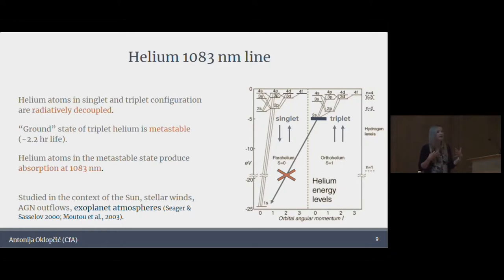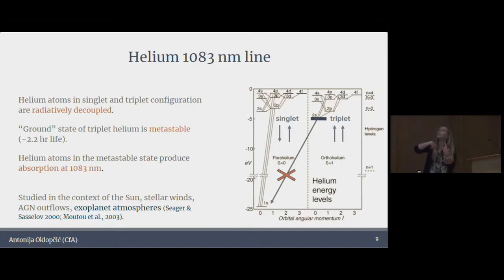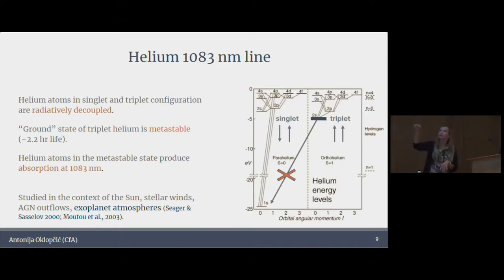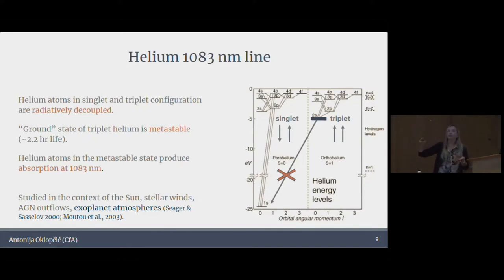The origin of this line is really interesting from an atomic physics point of view. It comes from the fact that helium atoms can exist in two configurations based on the relative orientation of spin of their two electrons. If the spins are anti-parallel, we're talking about the singlet configuration. If they're parallel, we have a triplet configuration. These two configurations basically live independently of each other because they're radiatively decoupled — an atom can transition between singlet and triplet, but radiative transitions are suppressed.